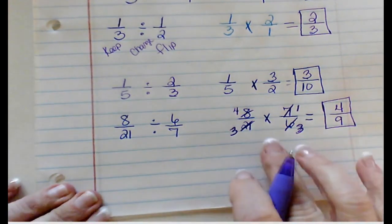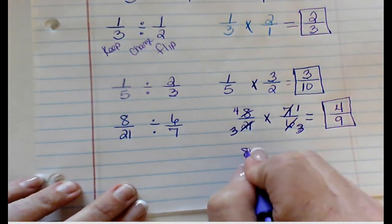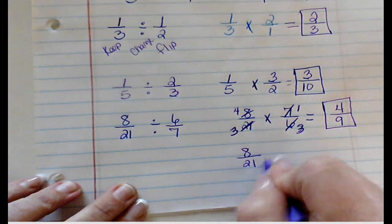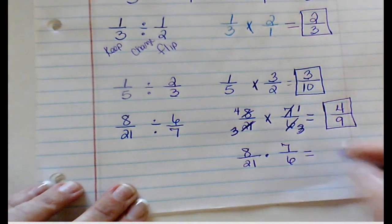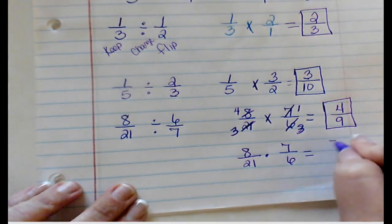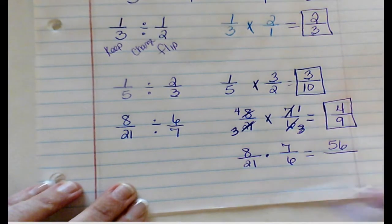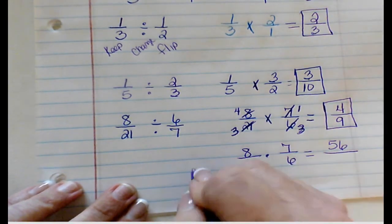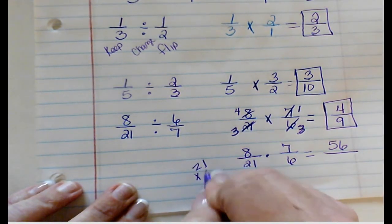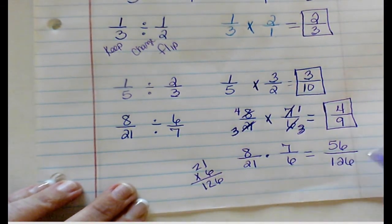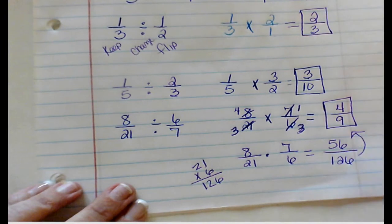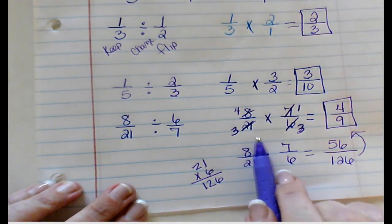If we had not cross-simplified, 8 over 21 times 7 over 6. 8 times 7 is 56, 21 times 6 - you will have to do the multiplication - it's 126. And then we will have to simplify this. So this is a lot easier if you cross-cancel first, just like if you were in multiplication.